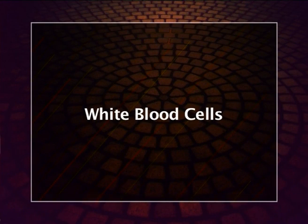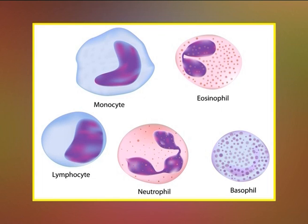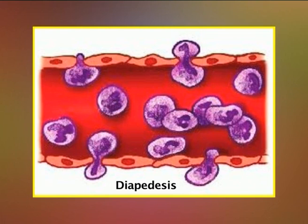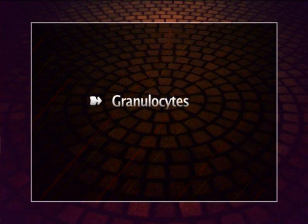White blood cells, macrophages, inflammatory reactions, fever, interferons, the complement system, and natural killer cells operate together to check damage to the body by pathogens. White blood cells are most important from an immunity standpoint. Their numbers change during infection and they creep out of capillaries by amoeboid movement into intercellular spaces — a process called diapedesis. WBCs are of two types: granulocytes and agranulocytes.